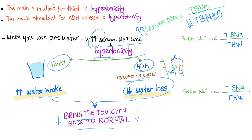When you're hypertonic, you become thirsty — there is no need to download an app to track how much water you drink. You already have osmoreceptors in your hypothalamus. They already do this for you for free.